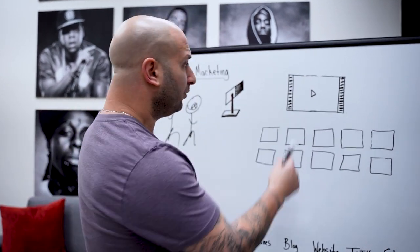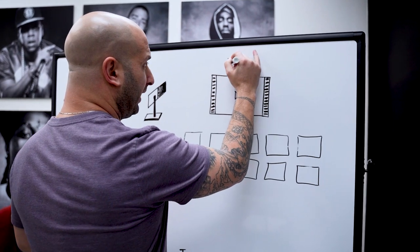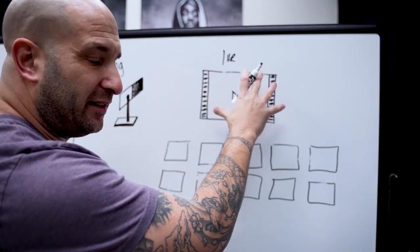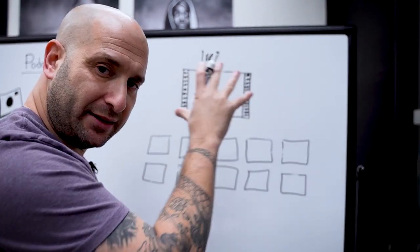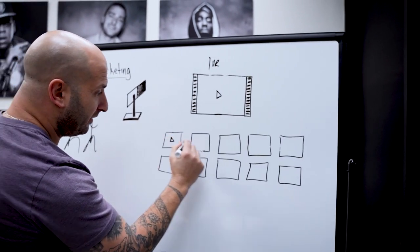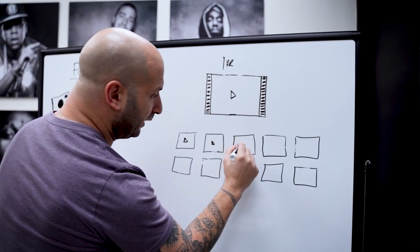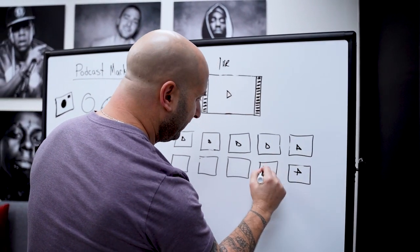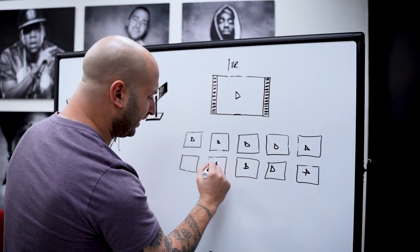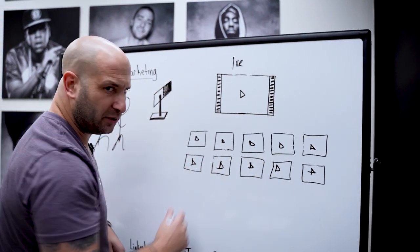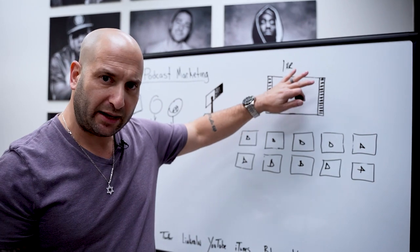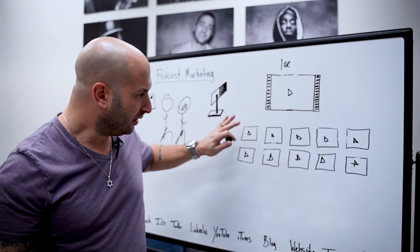So if we start with a one-hour podcast and then take it and break it down into the questions we talked about, that is going to give us 10 little video assets that can be anywhere from 30 seconds up to two or three minutes long. So one-hour podcast, 10 Q&A sessions, makes 10 short videos.